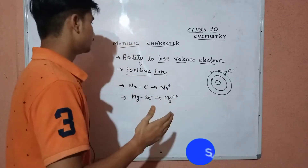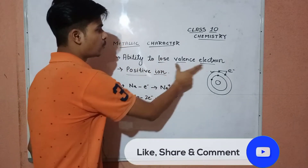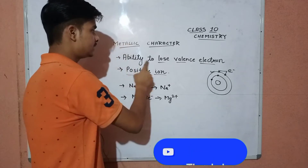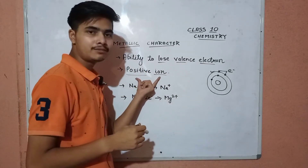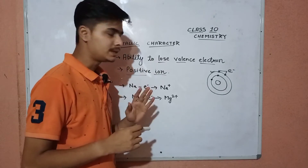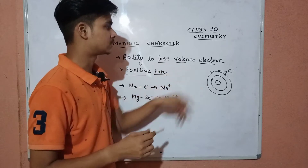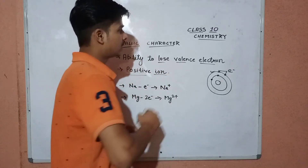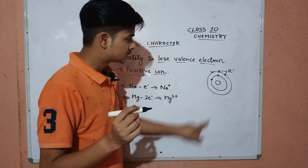So what is a metal? Those elements which have the ability to lose their valence electrons and form a positive ion are considered as metals. Now, what are valence electrons? Valence electrons are the electrons of the last shell of every atom.